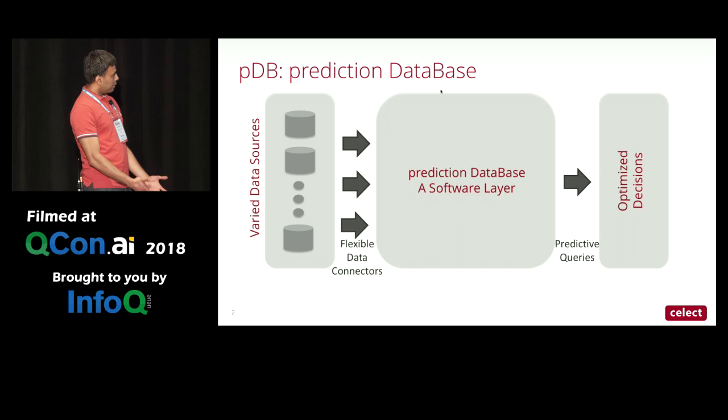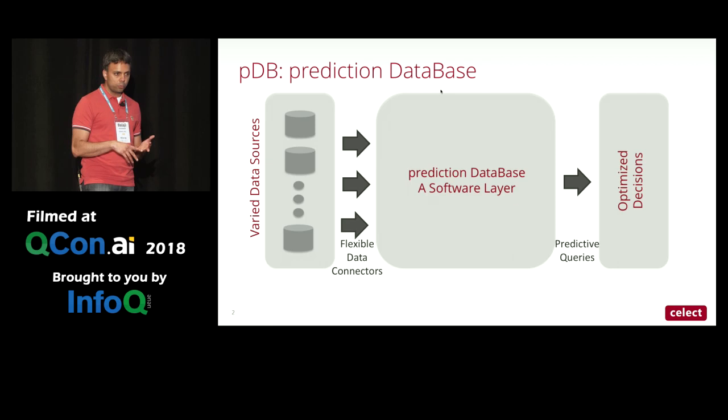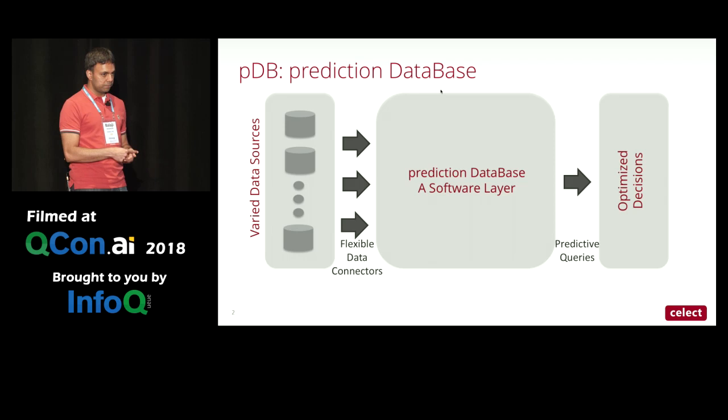When we were building it, we wanted it to work with all kinds of data sources — text, numeric data, images, geospatial data, time series, et cetera. And it should work with all kinds of prediction problems, so it should be able to do out-of-the-box time series predictions, classification, and anomaly detection.